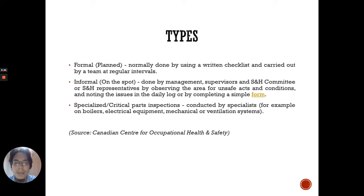Generally, there are three different types of OSH inspections. First is the formal or planned inspection, which is normally done by using a written checklist and carried out by a team at regular intervals. The second type is the informal or on-the-spot inspection, done by management, supervisors, and safety and health committee representatives by observing the area for unsafe acts and conditions and noting issues in the daily log or by completing a simple form. The third type is the specialized or critical parts inspection, conducted by specialists on items such as boilers, electrical equipment, mechanical or ventilation systems.